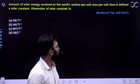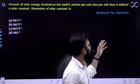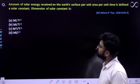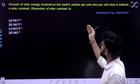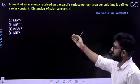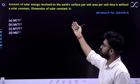Let us see this question first and mind you this question came on 3rd September 2020 shift 2. This question says amount of solar energy received on the earth surface per unit area per unit time is defined as solar constant. So, dimension of solar constant is?